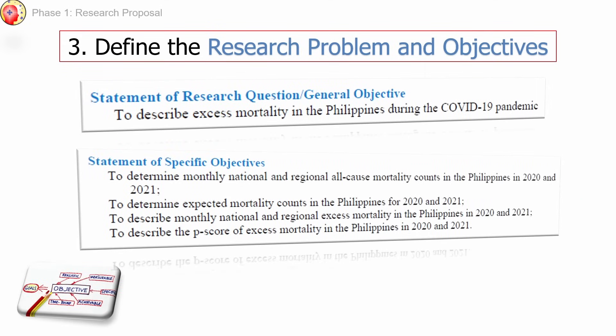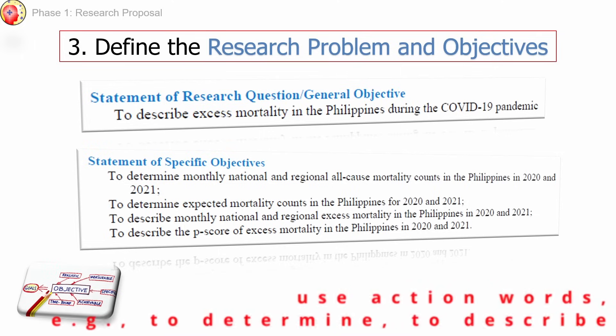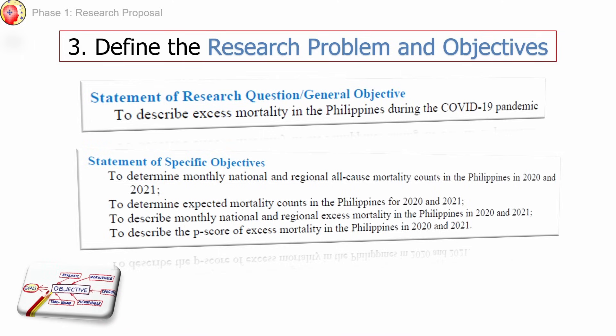Here's a real-life example of a published study with its research question, general objective, and specific objectives. When writing objectives, use action words such as to determine, to describe, to compare, to evaluate. However, separate your methodology from your objectives — do not list your methodology in your objectives. Rather, indicate why you are doing your methodology, answering the question of what you aim to find out.